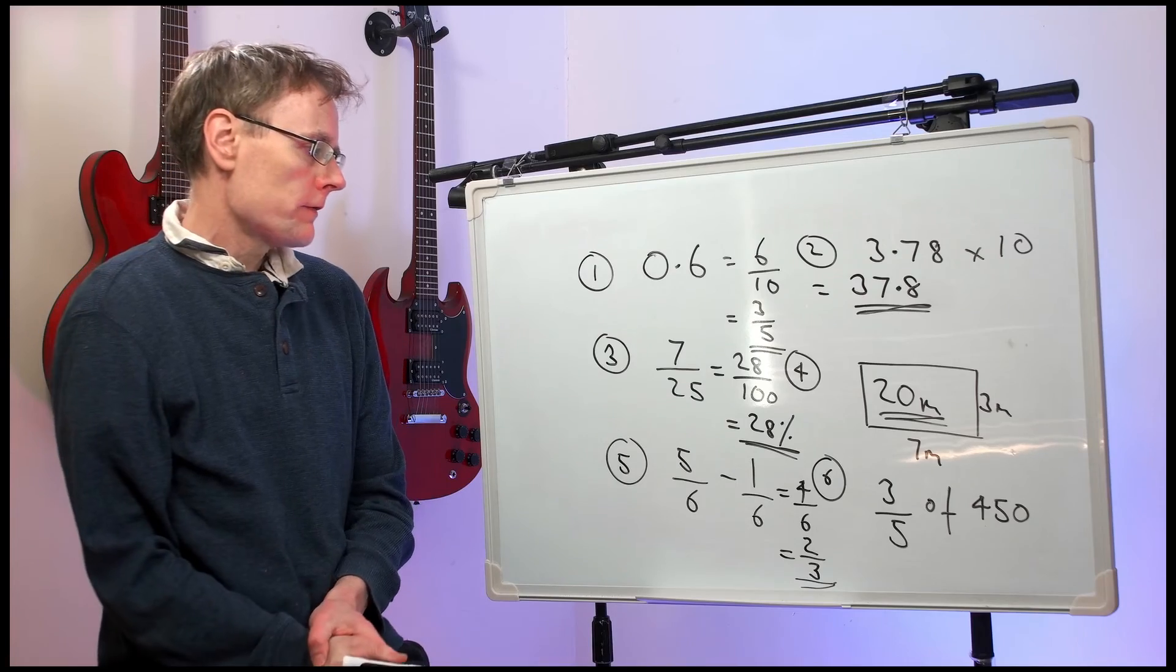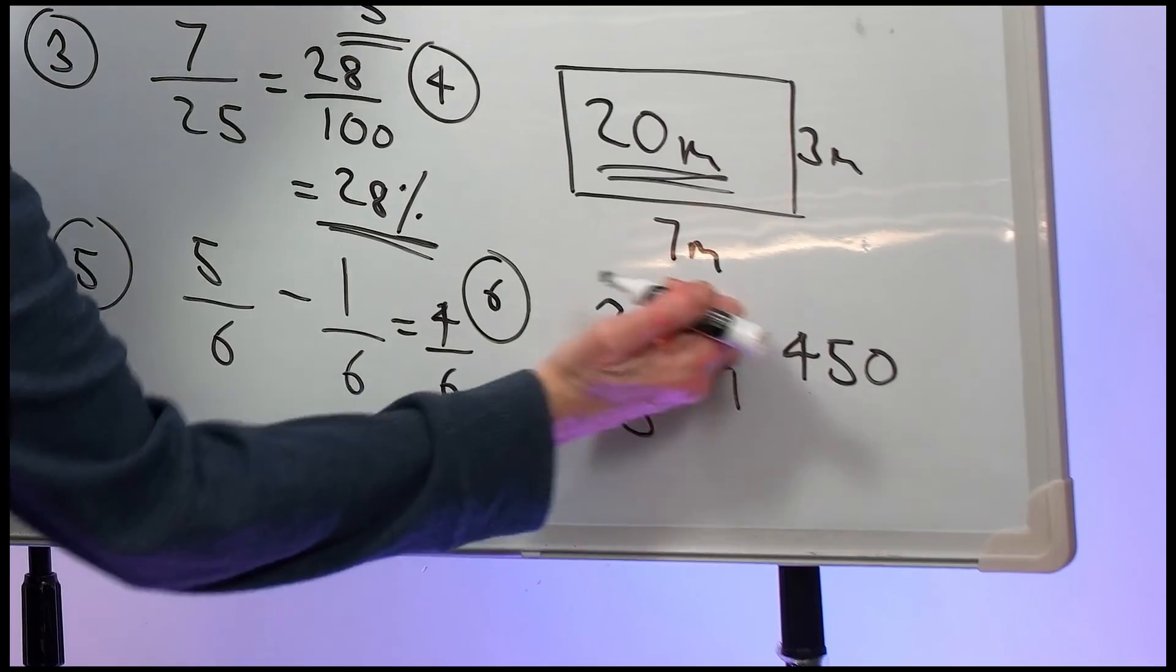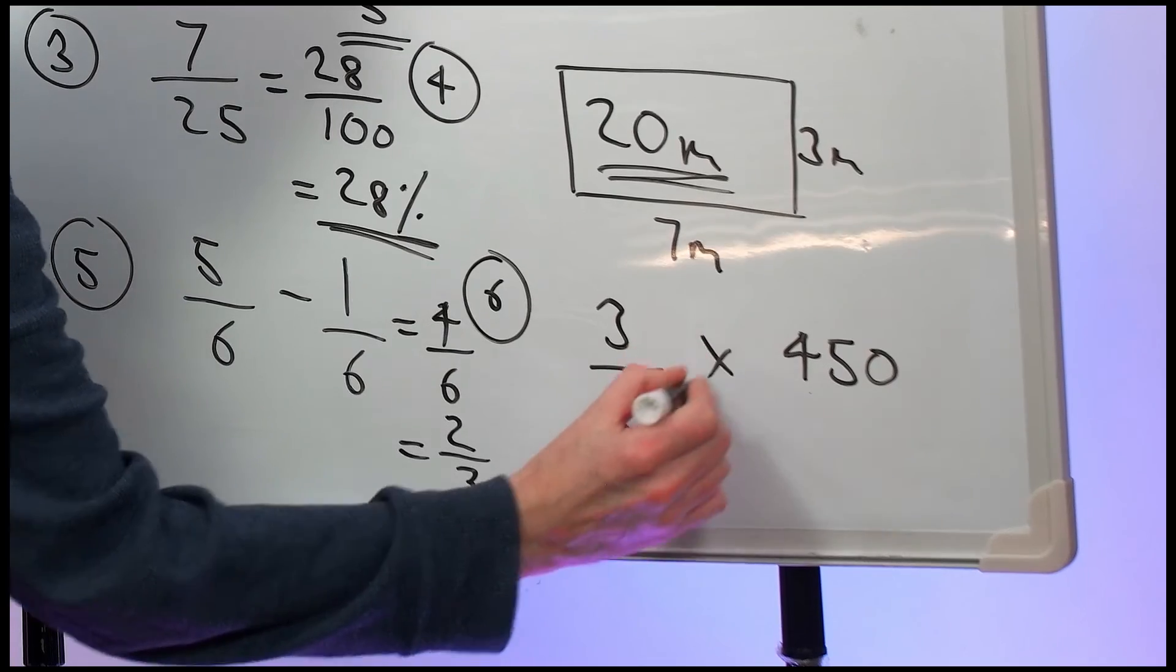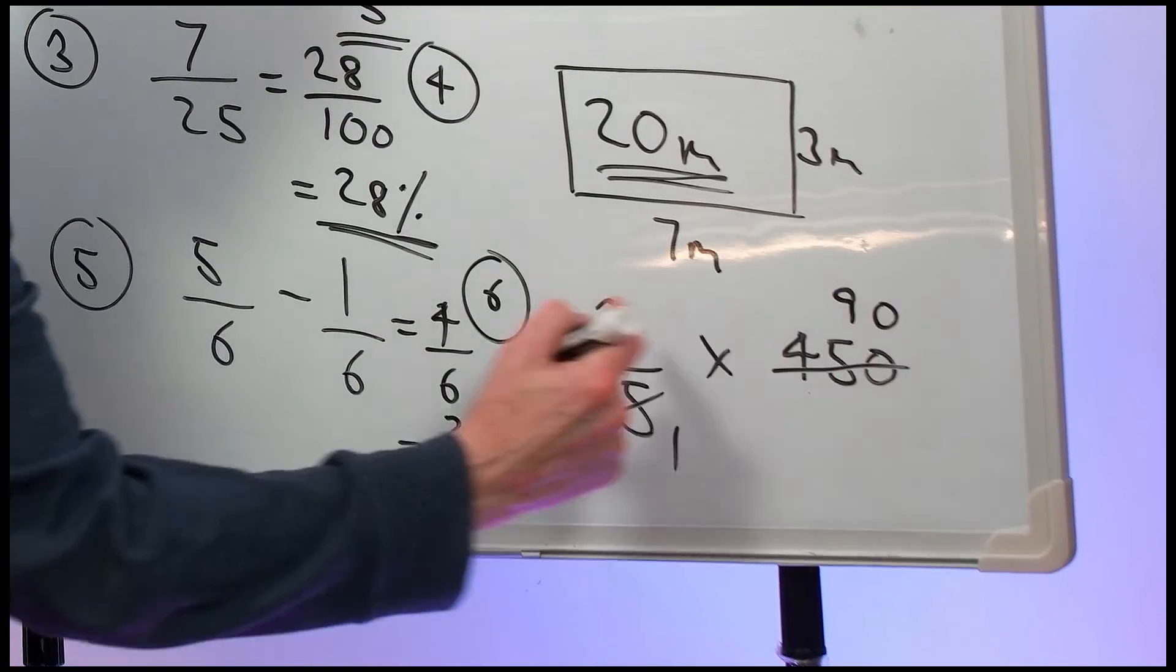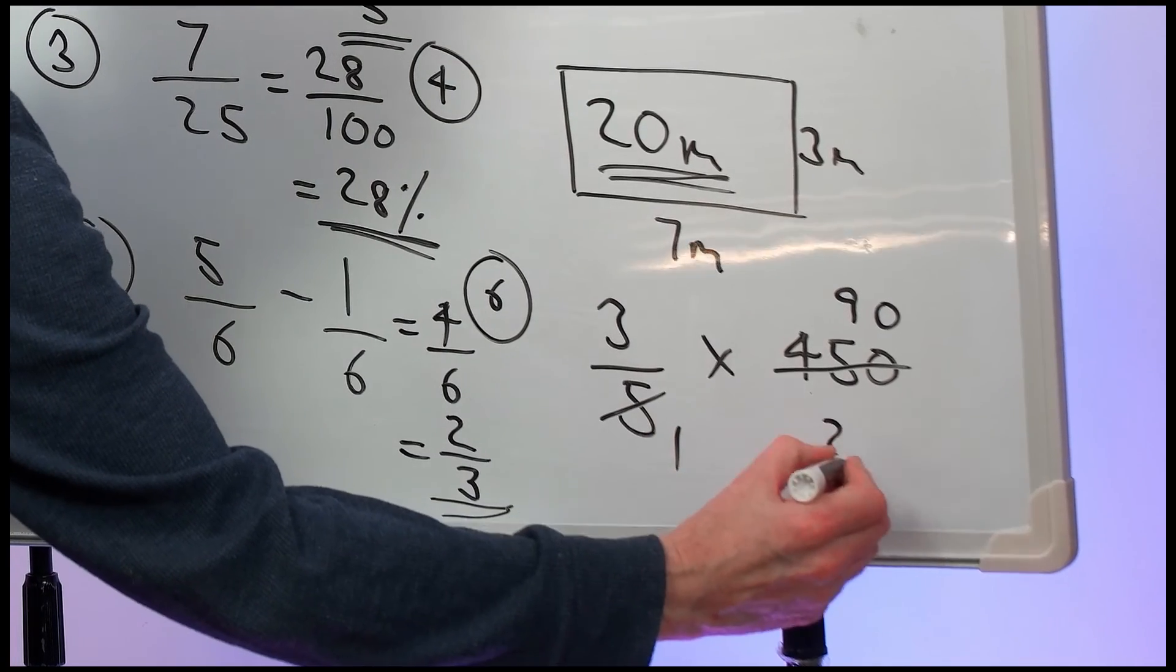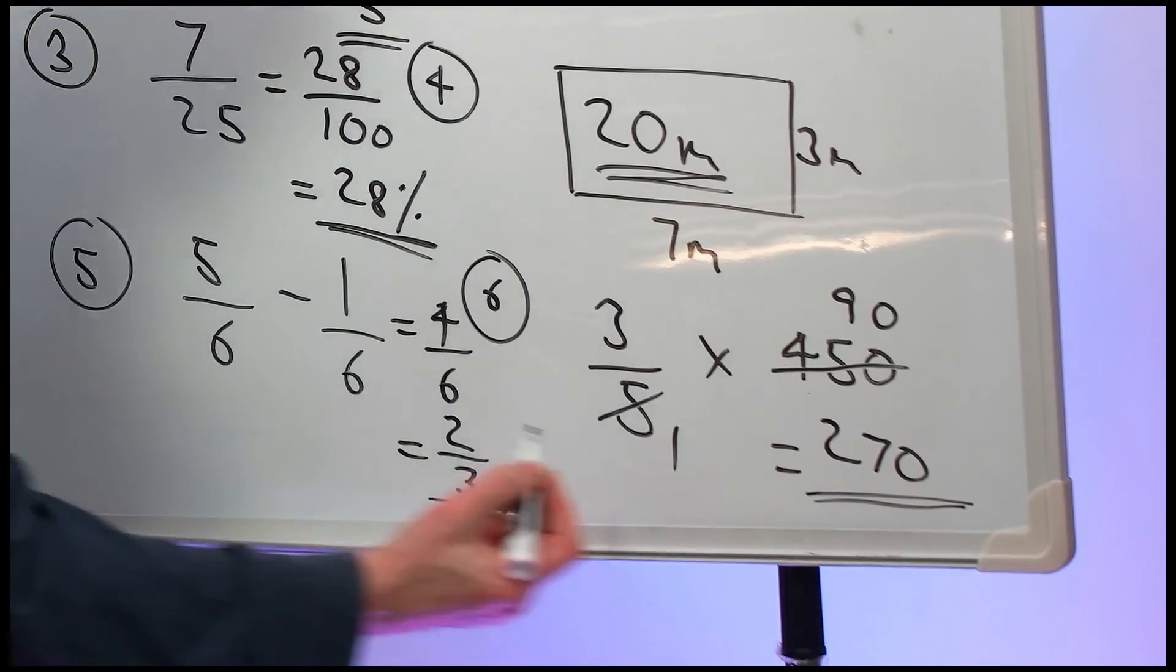Question six: Three-fifths of 450. Well, of means times. We cancel it down. Five into five goes once. Five into forty-five goes nine times. That's 90. Three nines are 27.